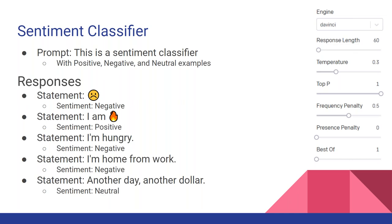Here's a sentiment classifier — based on the Twitter sentiment classifier in the demos. The prompt is 'this is a sentiment classifier,' and then you provide examples formatted like: statement, and then the sentiment — negative, positive, or neutral. I gave it a frowny emoji — it said negative. I said 'I'm home from work' and it said that's a negative thing, which I usually think of as a positive, but okay.